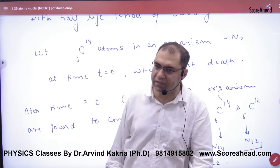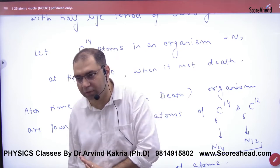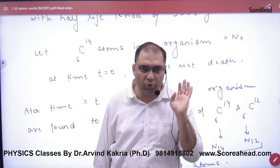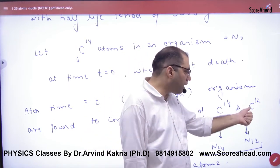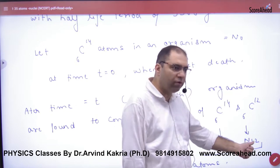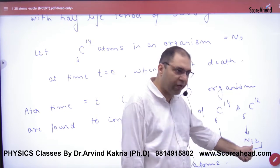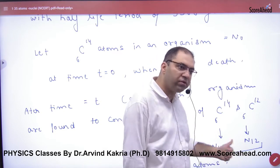In organisms, N0 total number of atoms was Carbon-14. Now what happened? It started to break, Carbon-14 and Carbon-14. Carbon-12 number of atoms is 12, number of atoms in Carbon-12 and number of atoms in Carbon-14, and the sum of N0.